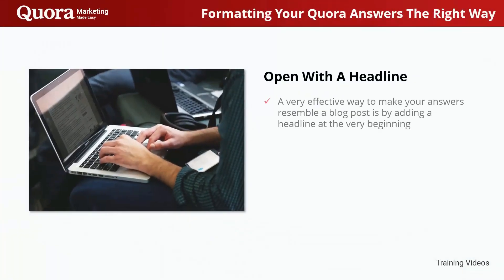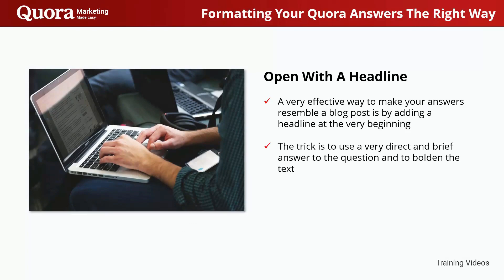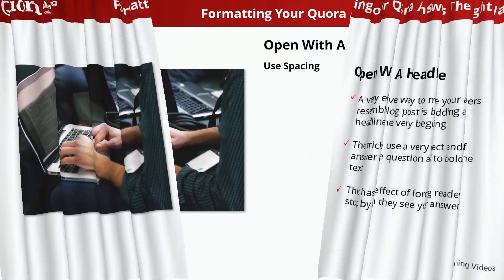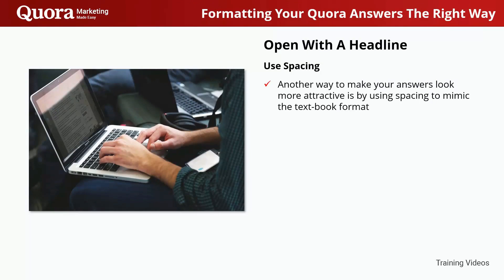Open with a headline. A very effective way to make your answers resemble a blog post is by adding a headline at the very beginning. The trick is to use a very direct and brief answer to the question and to bolden the text. Then you'll simply have to follow up with the longer answer. This has the effect of forcing readers to stop by when they see your answer, and it helps your answer stand out even when you're not the first to reply. Use spacing: another way to make your answers look more attractive is by using spacing to mimic the textbook format — separate your text into paragraphs.